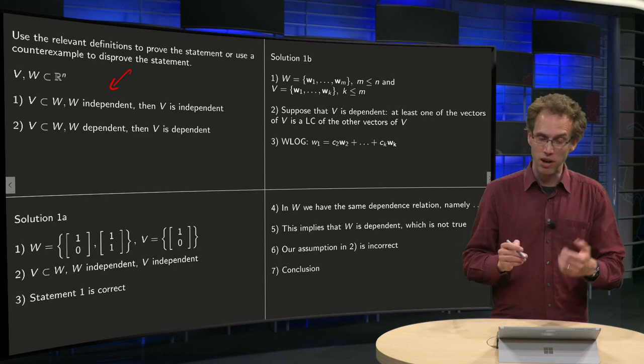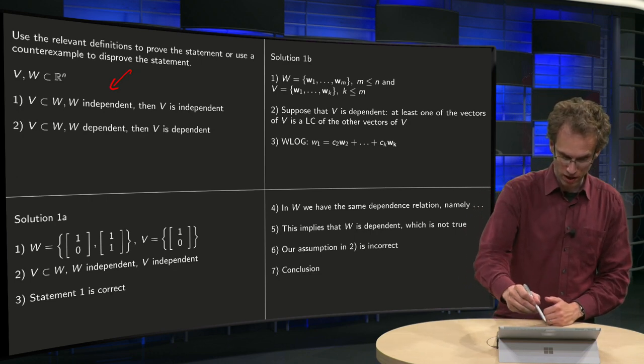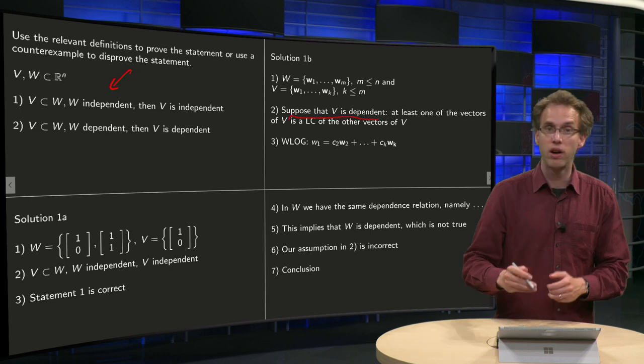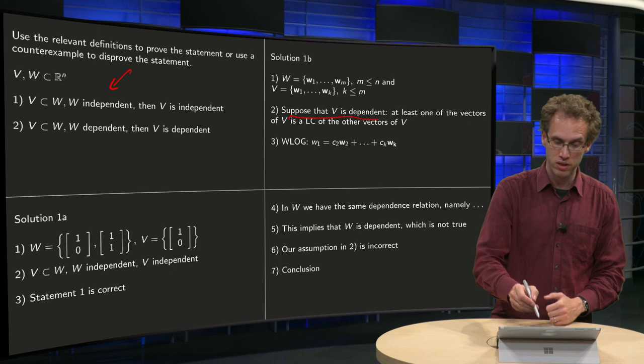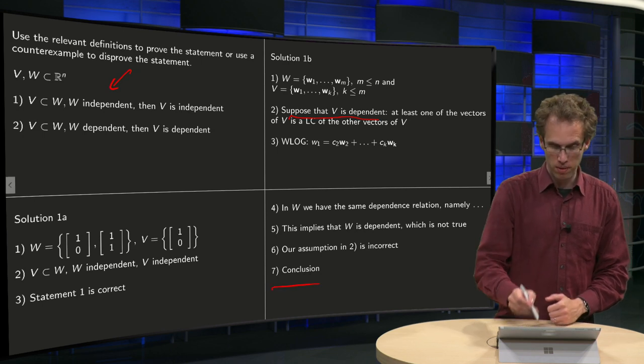So that means that our assumption in step 2 over here, what we suppose is wrong, our assumption that V is dependent is incorrect, so we can conclude that V is independent.